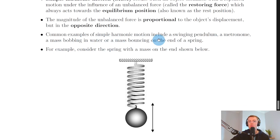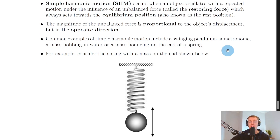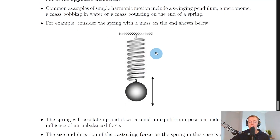Some common examples of SHM include a swinging pendulum, a metronome, a mass bobbing in water, or a mass bouncing on the end of a spring — and something like an old grandfather clock. In the Advanced Higher exam you're likely to see a question on SHM involving a mass bobbing on the end of a spring, or something like a simple pendulum, as these are typical examples.